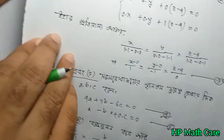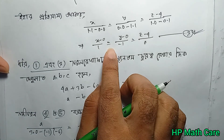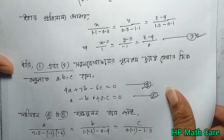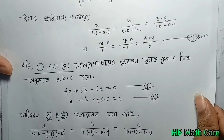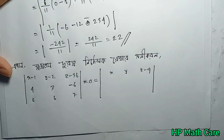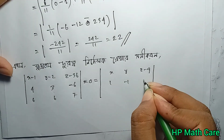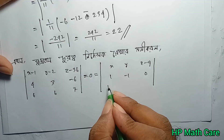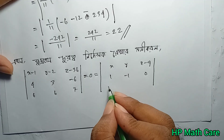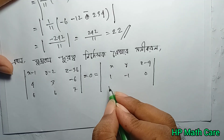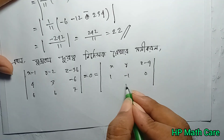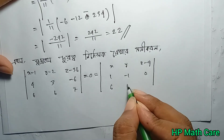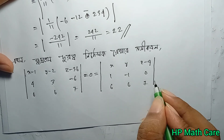This is 1 minus 1 equals 0. So, 1 minus 1 is 0. This is the way you can see it: 6, 6, 7.